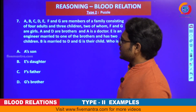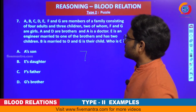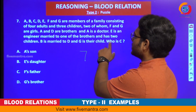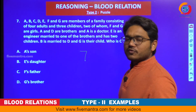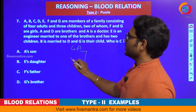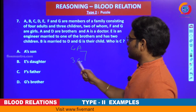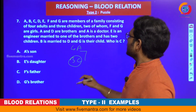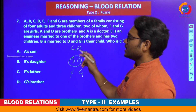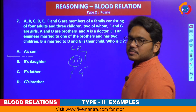There are members A, B, C, D, E, F, and G — seven members. They are members of a family consisting of four adults and three children, two of whom — F and G — are girls. A and D are brothers.